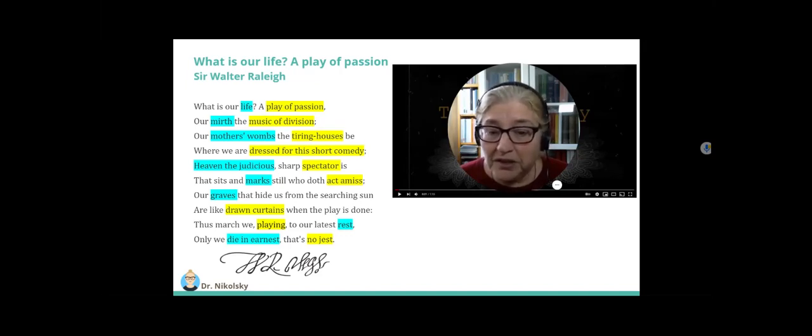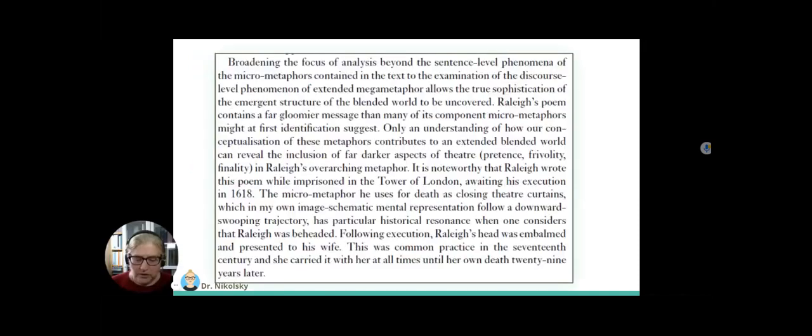To return again to Gavins' criticism of the usually linguistically oriented manner of studying metaphors, as single lexemes or as a sentence at the most, Gavins says on page 152: 'Broadening the focus of analysis beyond the sentence-level phenomena of the micrometaphors contained in the text to the examination of the discoursal-level phenomenon of extended megametaphor allows the true sophistication of the emergent structure of the blended world to be uncovered. Only an understanding of how our conceptualization of these metaphors contributes to an extended, blended world can reveal the inclusion of far darker aspects of theatre - pretense, frivolity, finality - in Raleigh's overarching metaphor.' Raleigh wrote this poem when he was in prison in the Tower of London, on the verge of being beheaded.